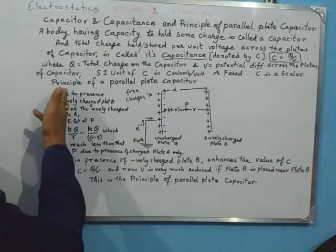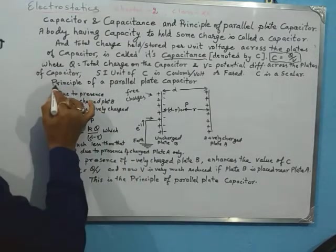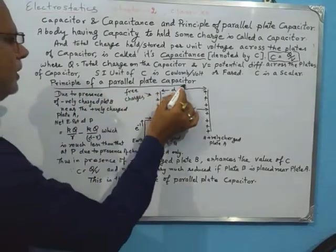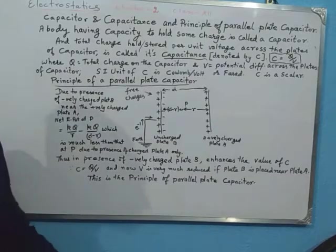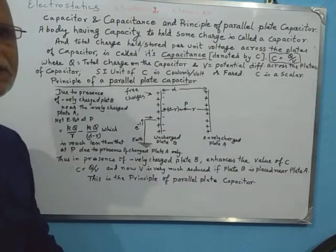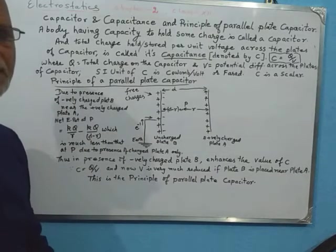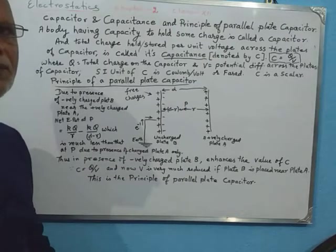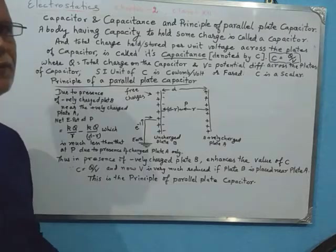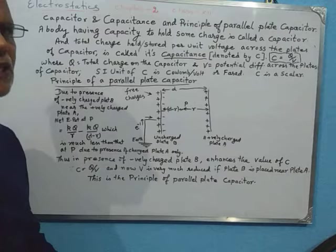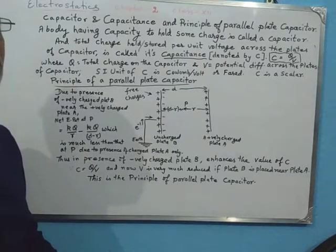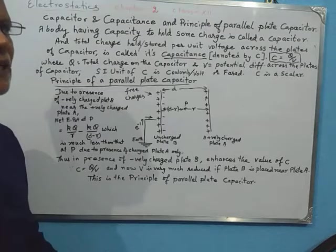Now we are going to talk about the principle of the parallel plate capacitor. When we deposit some charge on a single plate, the potential difference increases as we deposit more and more charge on it. Finally, the charge on the surface of the material starts leaking away, which is the limit beyond which it cannot hold any more charge.